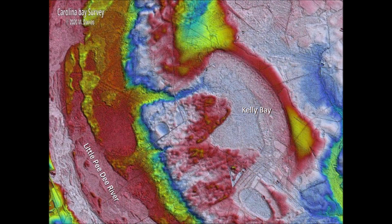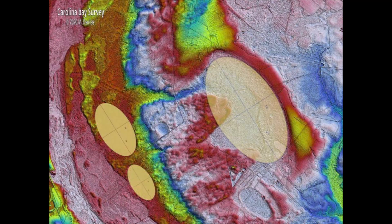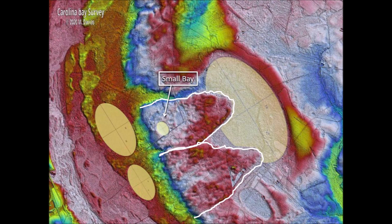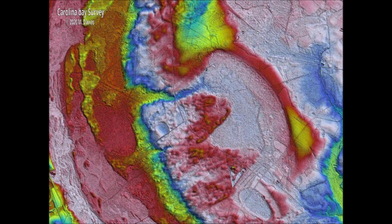This is a LiDAR image of Kelly Bay in South Carolina. We can determine the mechanisms by which it was formed using the law of superposition and its geological setting adjacent to the Little Pee Dee River. The first feature was formed when an impact created Kelly Bay. Next, there were several impacts on the riverbed whose edges are still visible but greatly eroded. The impacts on the riverbed splashed some mud on top of Kelly Bay, forming the typical splash chevrons. A few seconds later, a tiny projectile fell on top of one of the chevrons and made a small Carolina Bay.